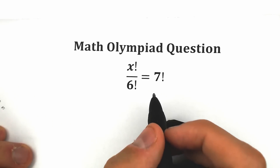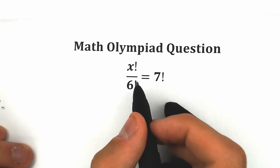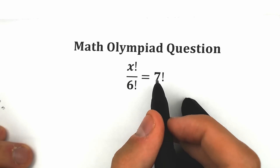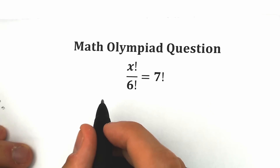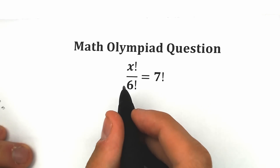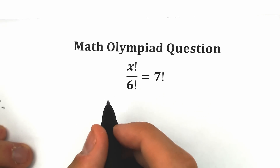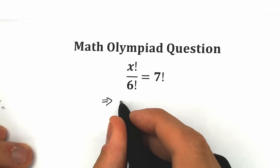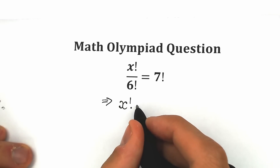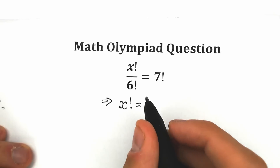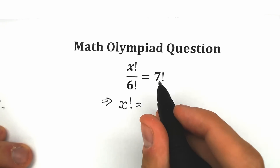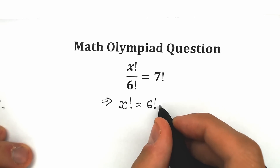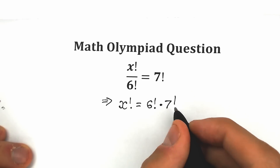First of all, we can easily find this x by cross-multiplying. We have a fraction and we have 7 factorial on the right side, so we apply cross-multiplying. As a result, we have that x factorial equal to 6 factorial times 7 factorial.